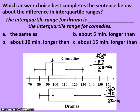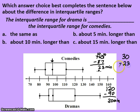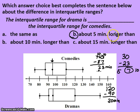Now let's look at a question comparing the interquartile ranges using the calculations we just made. The question asks which answer choice best completes the sentence: 'The interquartile range for drama is blank the interquartile range for comedies.' The choices are: the same as, about 5 minutes longer than, about 10 minutes longer than, or about 15 minutes longer than. The difference between the two interquartile ranges is 30 minus 23, which equals 7. Since 7 is closer to 5 than to 10, the best answer is about 5 minutes longer than.